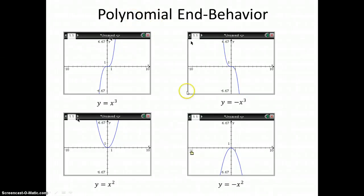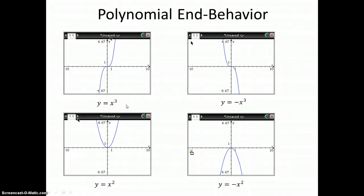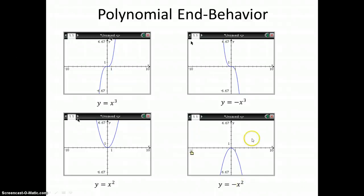So let's take a look at four different polynomials, and we can pretty much generalize it just from these. If you're in my class, you've started to see the connection between what we're going to do here and what we were doing in the past few days. So I have x cubed, negative x cubed, x squared, and negative x squared.